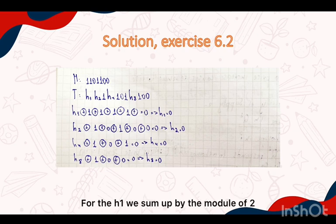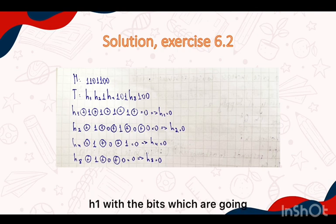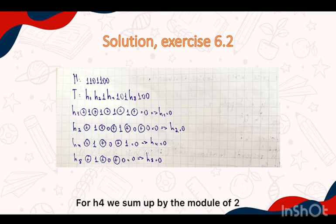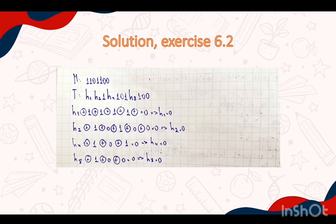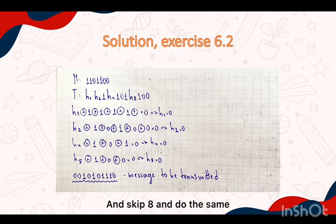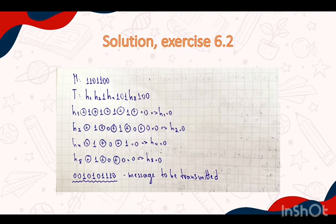For h1, we sum by modulo 2: h1 with the bits that come 1 bit after each one. For h2, we sum by modulo 2: h2 with the next 1 bit, then skip 2 bits, and repeat. For h4, we sum by modulo 2: h4 with the next 3 bits, then skip 4, and repeat. For h8, we sum by modulo 2: h8 with the next 7 bits, then skip 8, and repeat. So we find that the h1 Hamming bit equals 0, and you can see the final result on the screen.